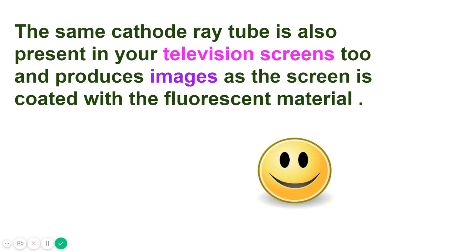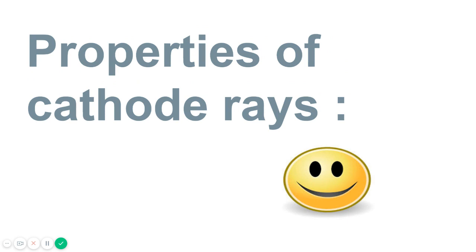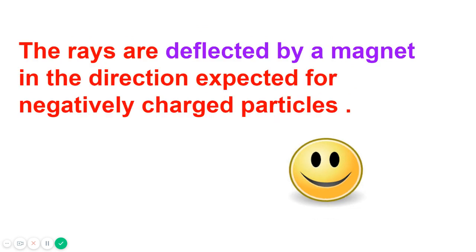Now let's see the properties of cathode rays and how did JJ Thompson determine that these are electrons. The first property is when you applied a magnet, the rays are deflected by a magnet in the direction expected for negatively charged particles. So JJ Thompson noticed that these particles are somewhat negatively charged.